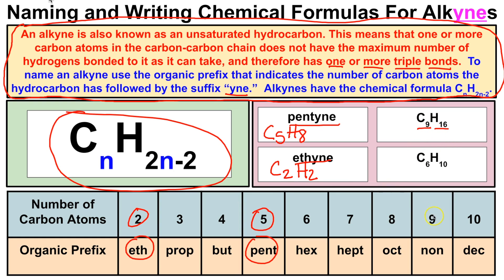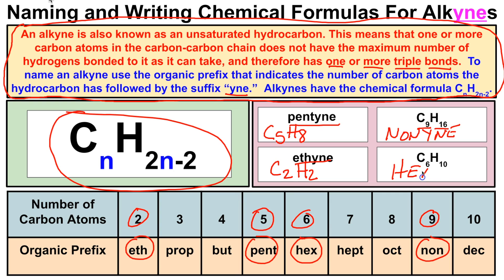If given the formula C₉H₁₆ and asked to name it: the prefix for 9 is 'non-', and 2 times 9 is 18, minus 2 is 16 — so this is an alkyne and gets the '-yne' ending: nonyne. For C₆H₁₀: six carbon atoms gives the prefix 'hex-', and 2 times 6 is 12, minus 2 is 10 — it fits the alkyne formula, so it gets the suffix '-yne', giving us hexyne.